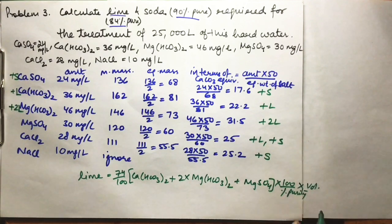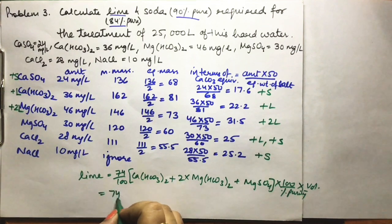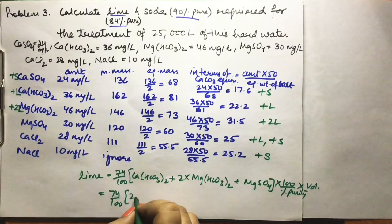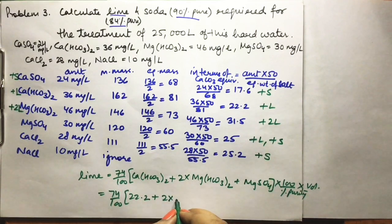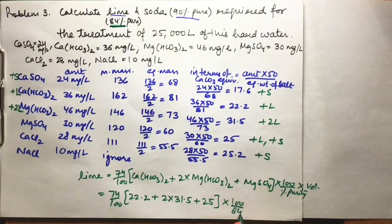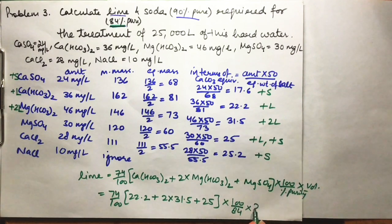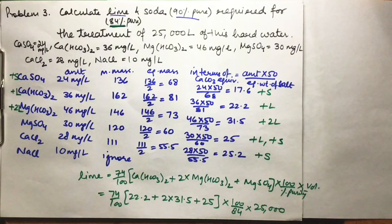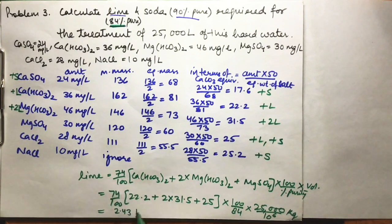Amount of lime = (74/100) × [Ca(HCO3)2 + 2 × Mg(HCO3)2 + MgSO4] × (100/84) × 25,000. Substituting: (74/100) × (22.2 + 2×31.5 + 25) × (100/84) × 25,000. This comes out to be 2.43 kg. This is the amount of lime required to purify this water.